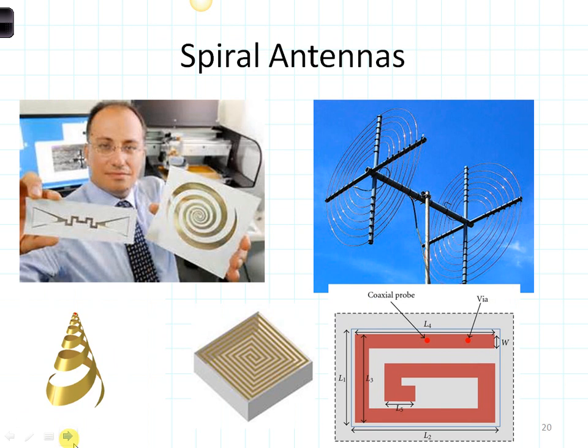Spiral antennas are also broadband designs. This one is thinner in the center part of the spiral, spiraling out to being thicker and thicker, and then again thin on the end. This is a different type — an Archimedean spiral where all of the arms are the same thickness, but it still spirals around. Here's a conical spiral, a planar printed spiral, and a spiral antenna used for medical implants.